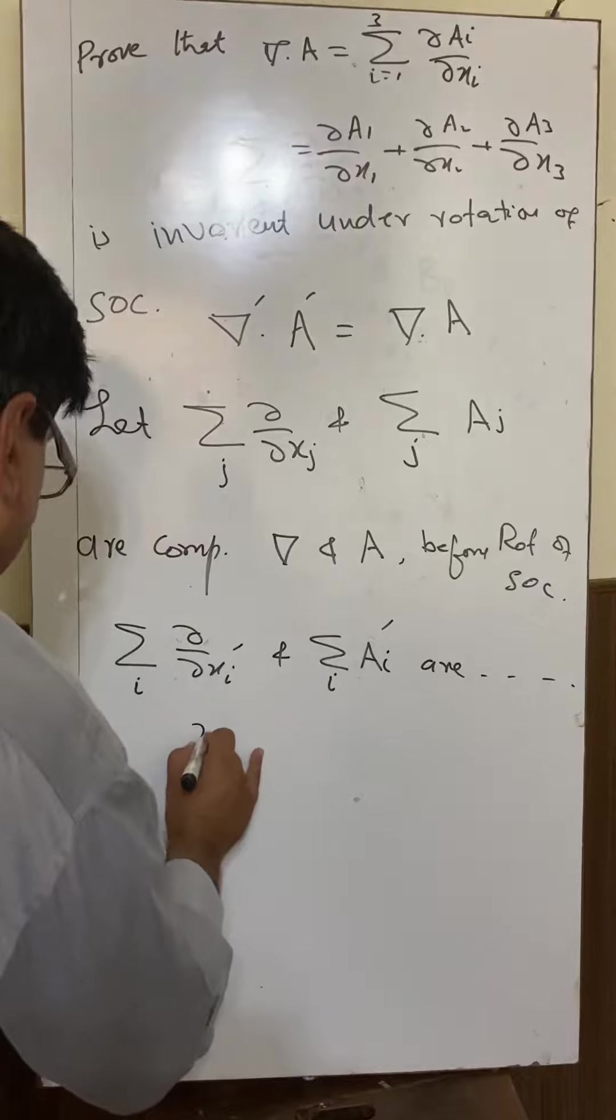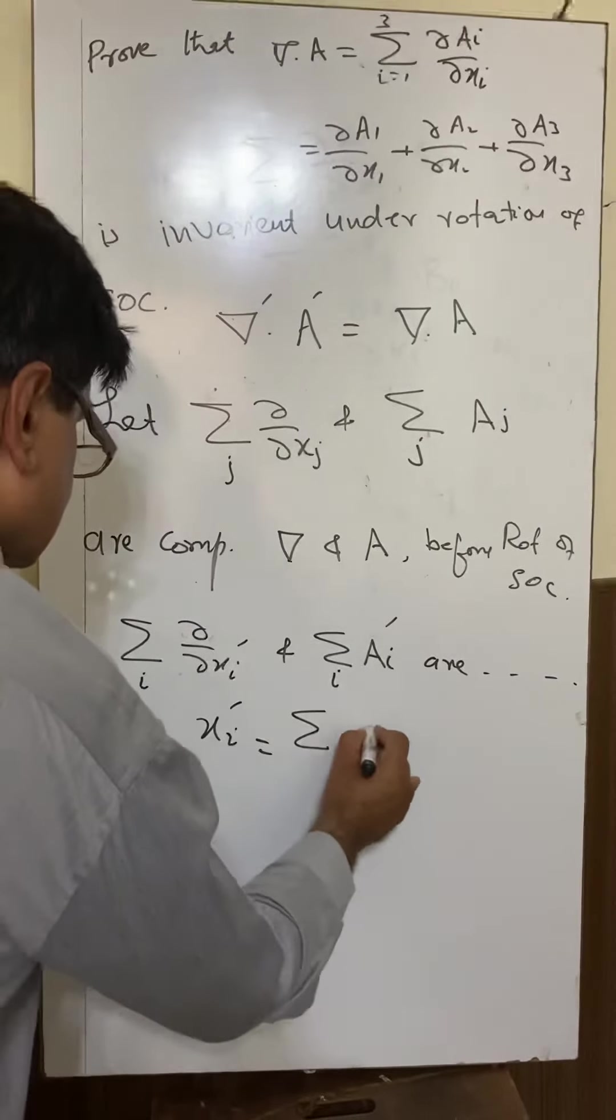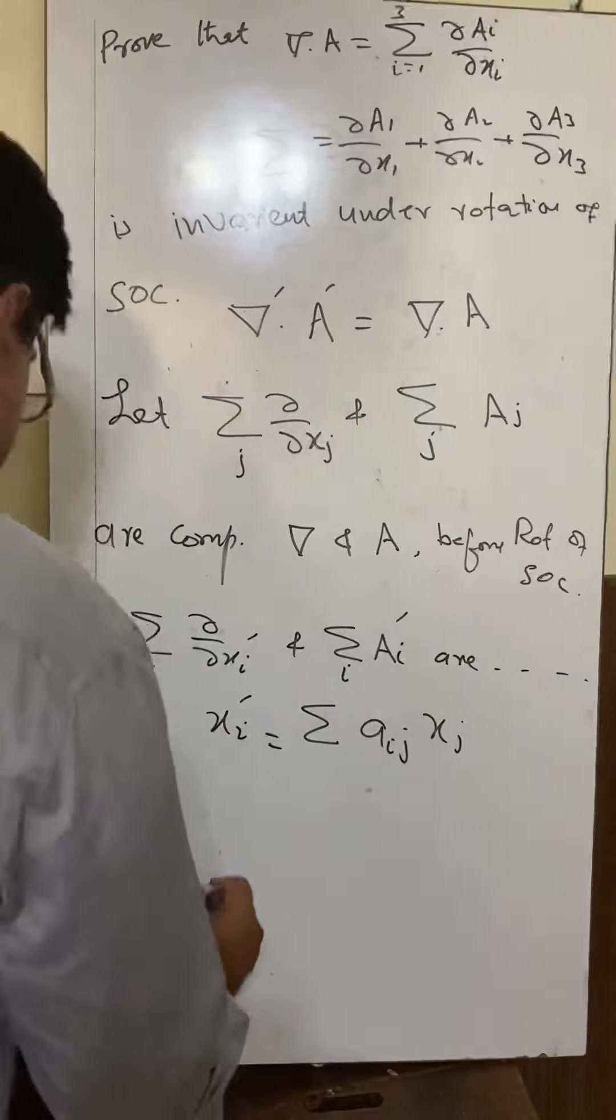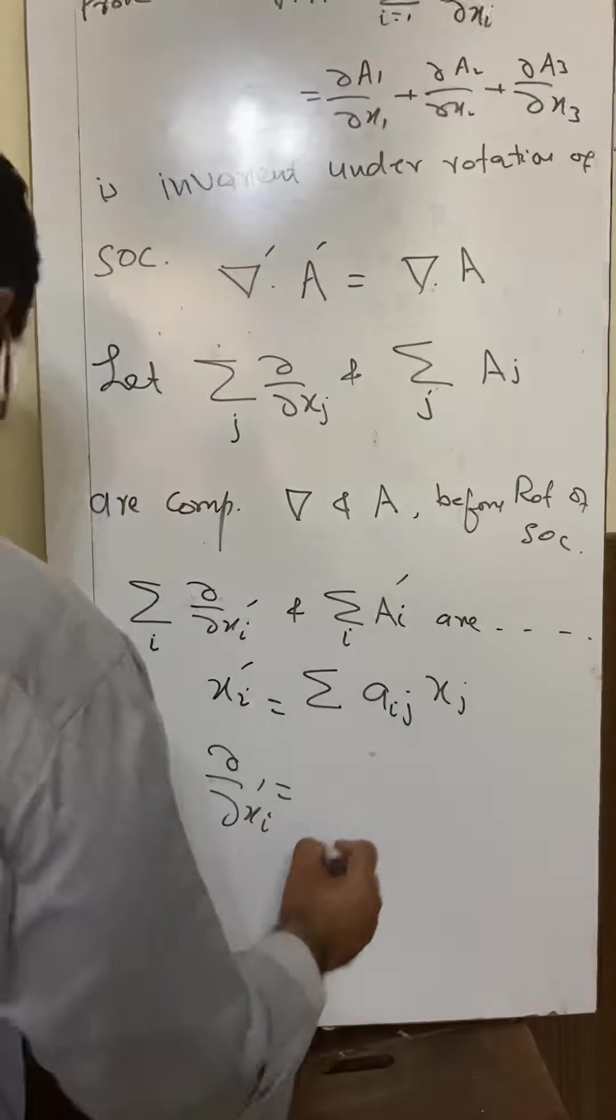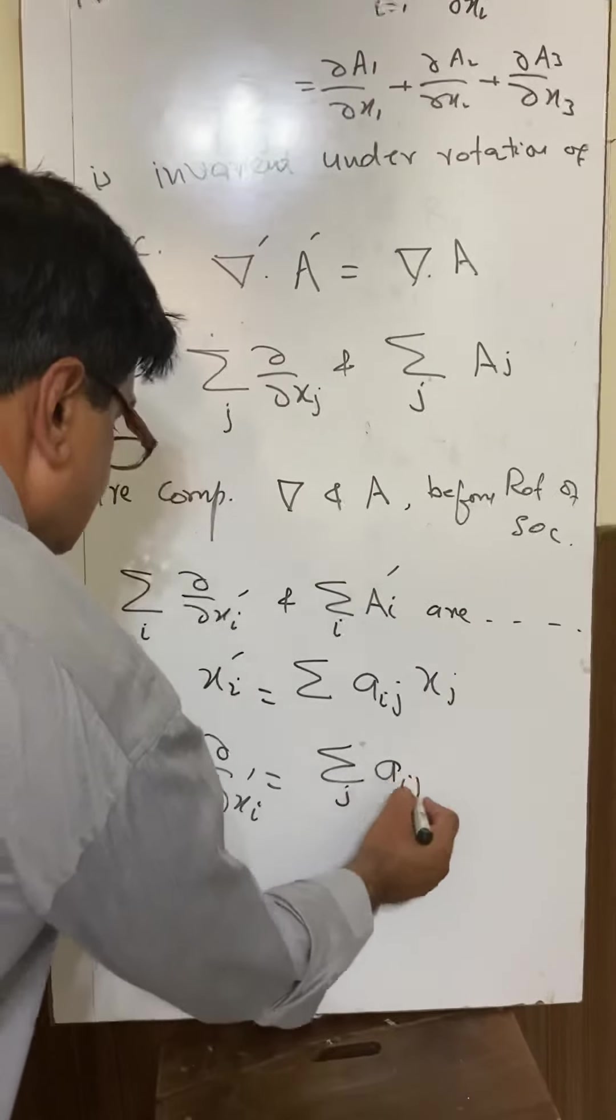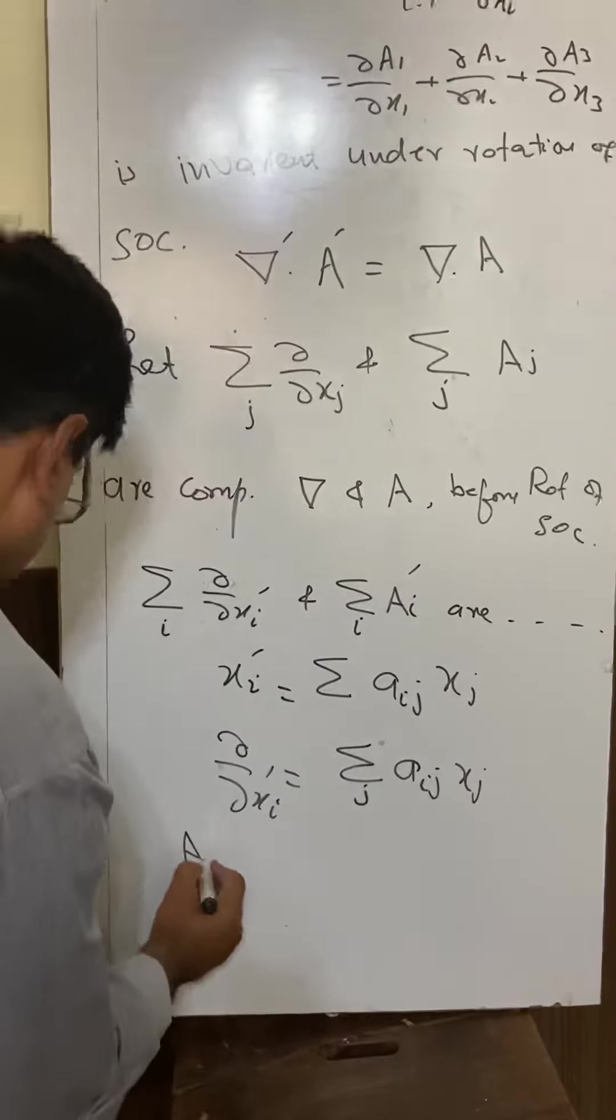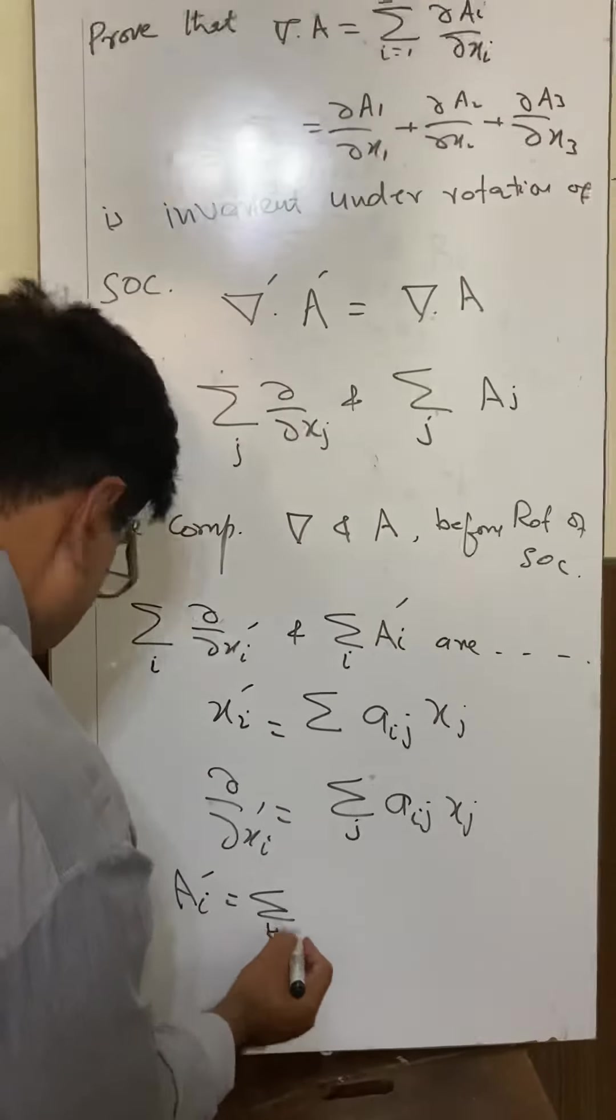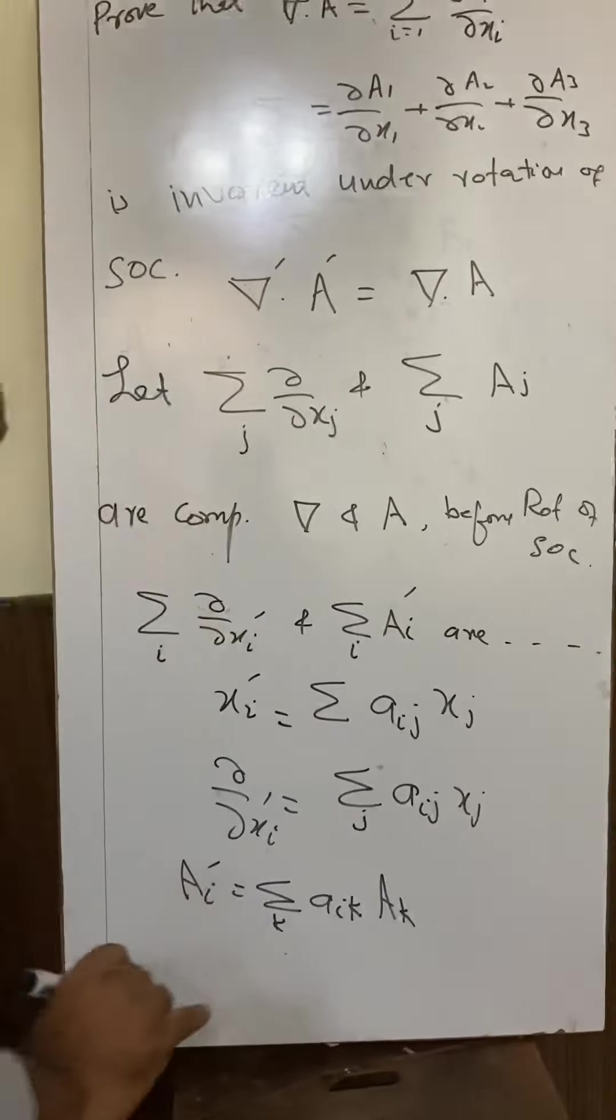According to the definition of a vector, x_i prime equals summation j a_ij x_j, whereas partial over partial x_i prime equals summation j a_ij partial over partial x_j. Similarly, A_i prime equals summation k a_ij A_k.